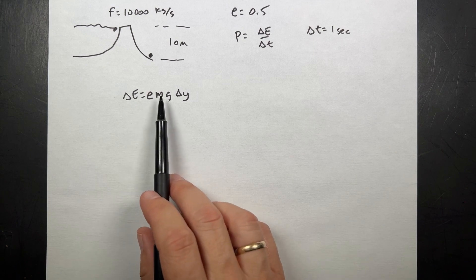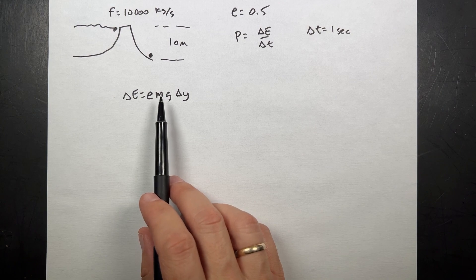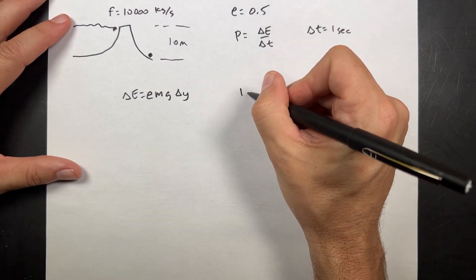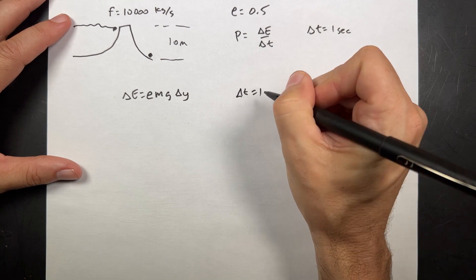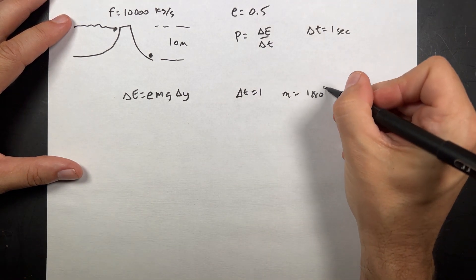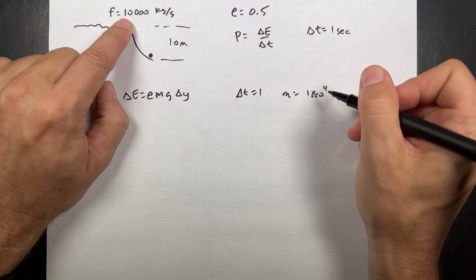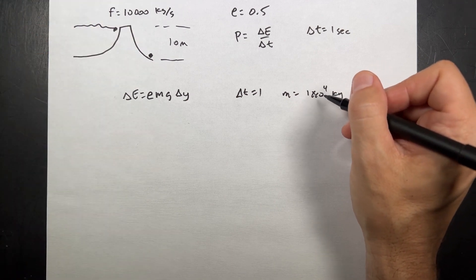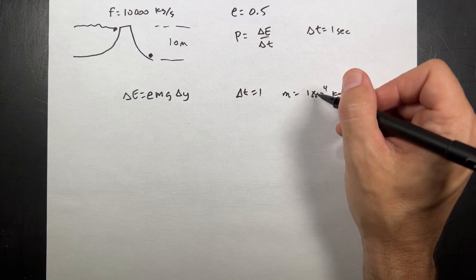So I know the change in energy. I don't know the mass, but I actually can find that. It's not too difficult. Because if I just say in one second, delta T equals one, then M is going to be one times ten to the fourth kilograms, right? Because if it's 10,000 kilograms per second, in one second you get 10,000 kilograms. So that's that.